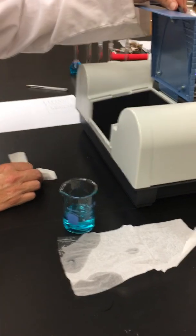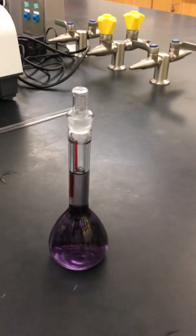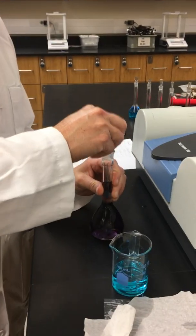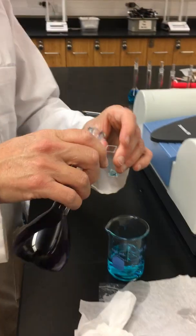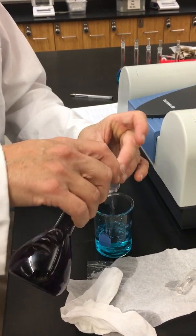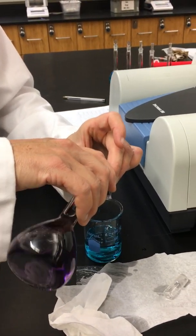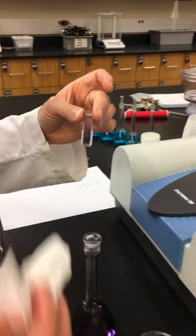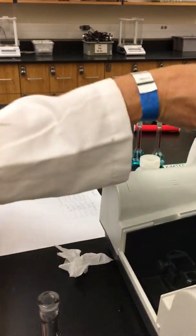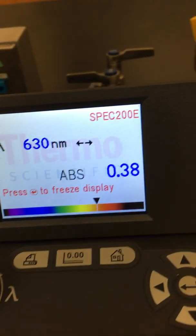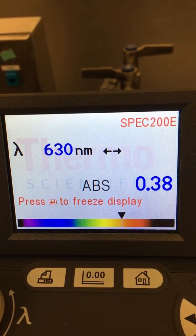The last one that we are going to measure is now our Kool-Aid mixture that we made in part A. Remember, we're trying to determine how much FD&C blue dye number one is found inside of our solution. First thing we want to rinse away anything we had from our previous one. Now we're ready to make that final measurement of our absorption of our Kool-Aid mixture. Our absorbance is 0.38.